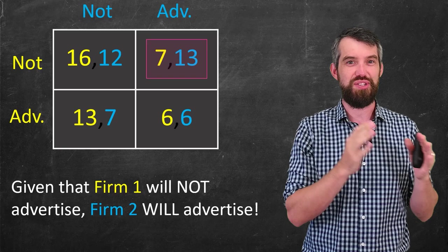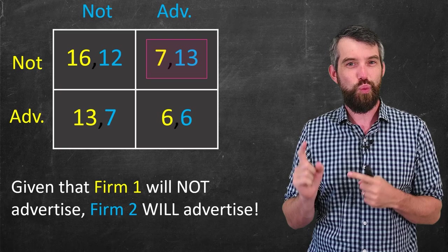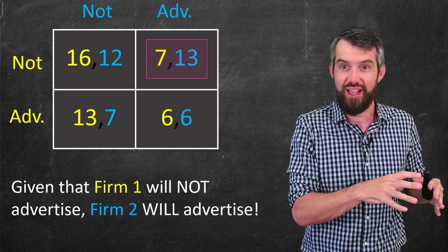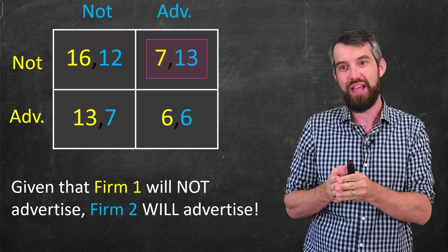So this is how you can use the idea of a dominating strategy to try to figure out how people are going to play. And it's kind of weird, it's kind of interesting that the initial asymmetry, which is that firm one was bigger, that if they didn't advertise at all, firm one would do better off and get the 16 versus the 12,